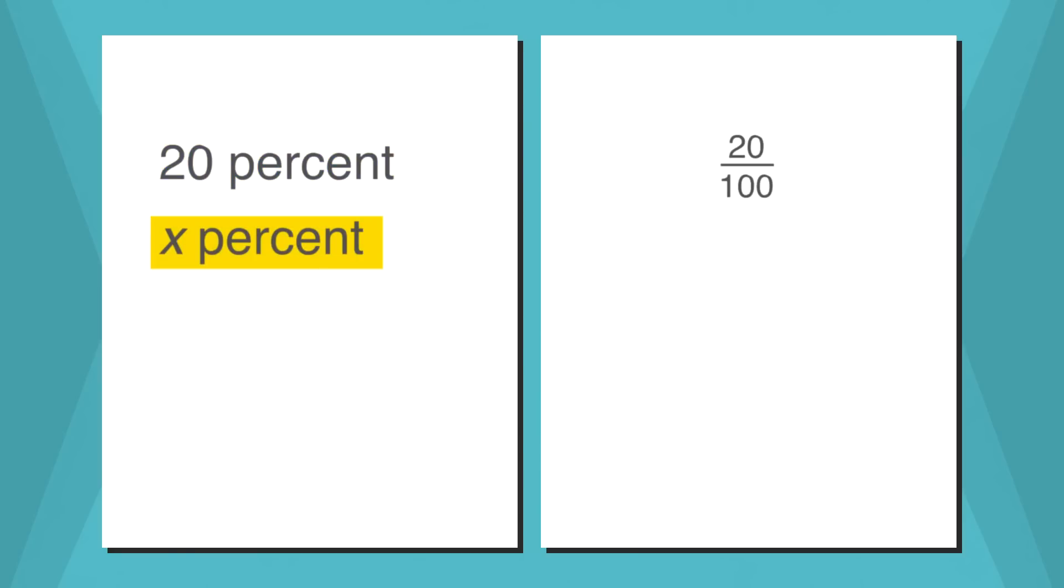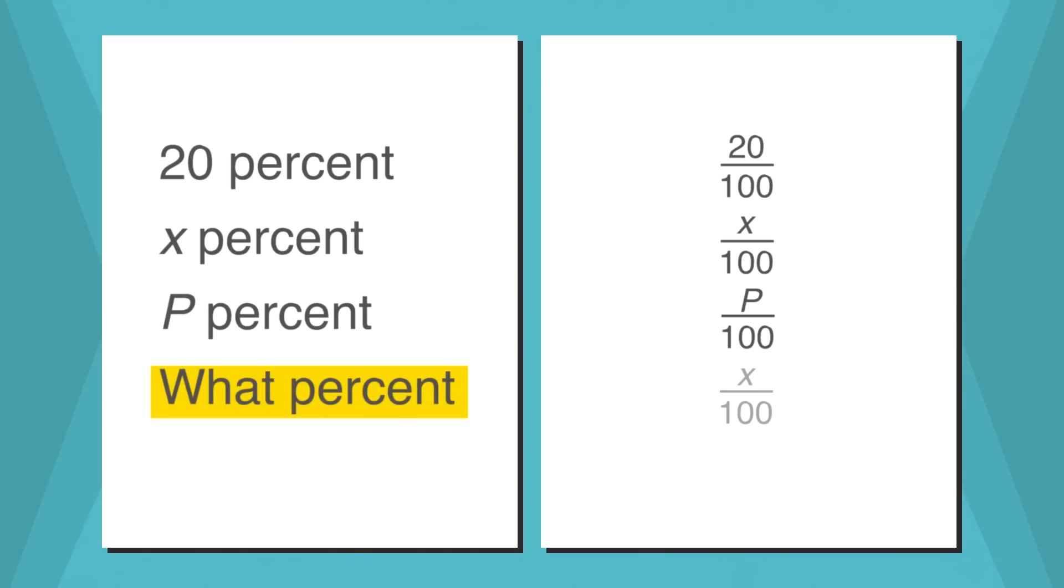X percent would be written as X over 100. P percent would be P over 100. And if a question asks what percent, we write it as either X over 100 or P over 100.